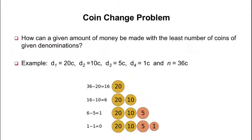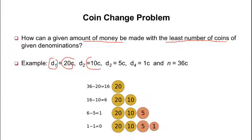This is a coin change problem, as discussed before under the brute force design technique. The problem is: how can a given amount of money be made with the least number of coins of a given denomination? Our aim is to find the minimum number of coins. For example, we have denomination 1: 20 cent, denomination 2: 10 cent, denomination 3: 5 cent, and denomination 4: 1 cent.